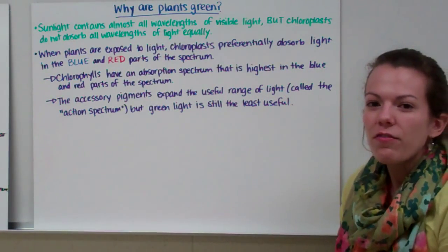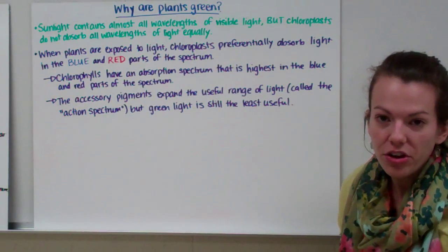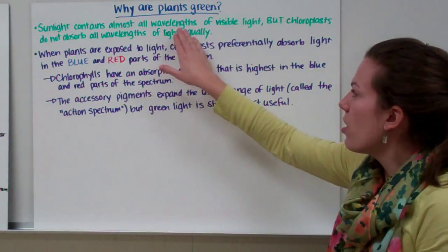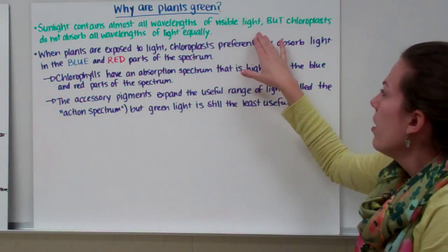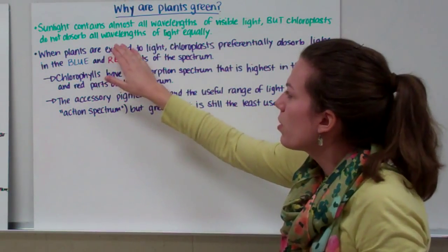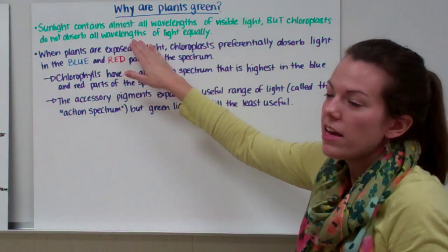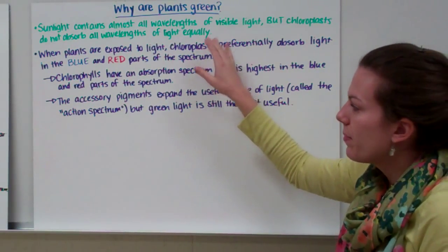Now kind of for an FYI, a little interesting tidbit of information. Why are plants green? So sunlight contains almost all wavelengths of visible light. So it has blue light, green light, red light, purple light, orange light, and so on. But chloroplasts do not absorb all the wavelengths of visible light evenly. They don't absorb all the wavelengths of visible light equally.